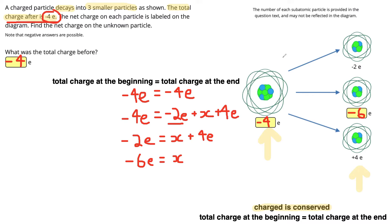We can check this now. We know these three should all add up to give us negative 4e. So if we do negative 2 plus negative 6, that gets us negative 8. Plus 4, that gets us negative 4, which is the total that we should be getting.